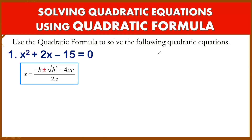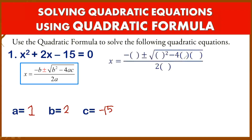Use the quadratic formula to solve: x² + 2x − 15 = 0. First, identify A, B, and C. In x², A is 1. In 2x, B is 2. And C is negative 15. We will substitute A, B, and C into the formula: negative B is negative 2; B squared is 2 squared; minus 4 times A, which is 1; times C, which is negative 15. The denominator is 2 times A, which is 2 times 1.